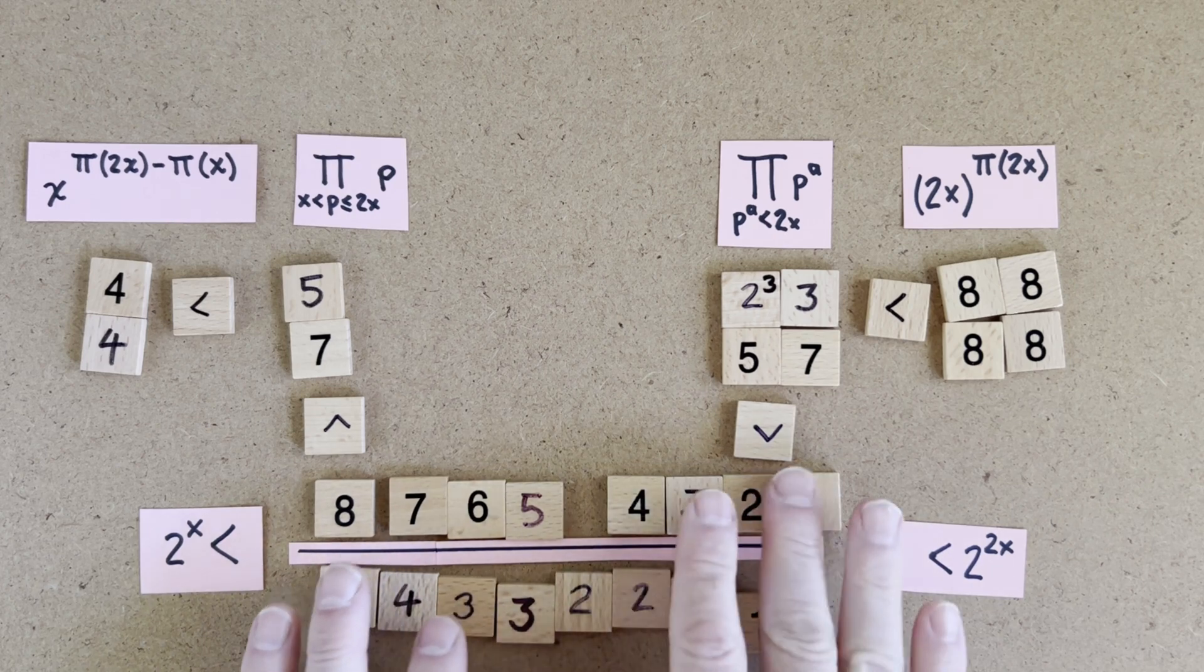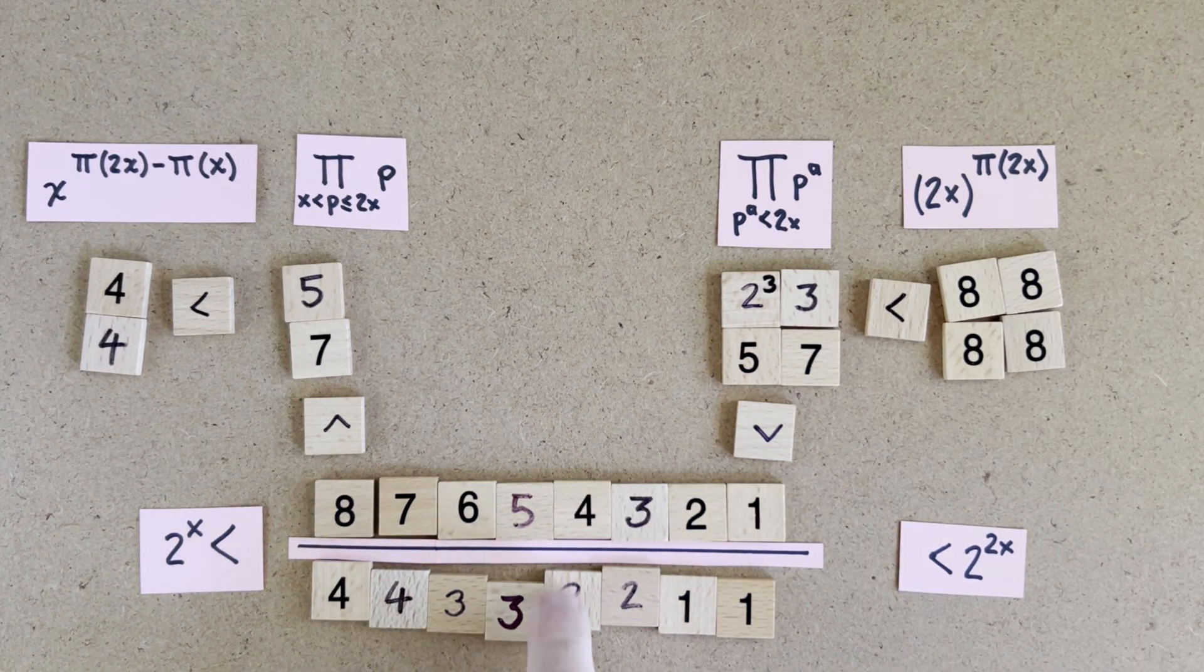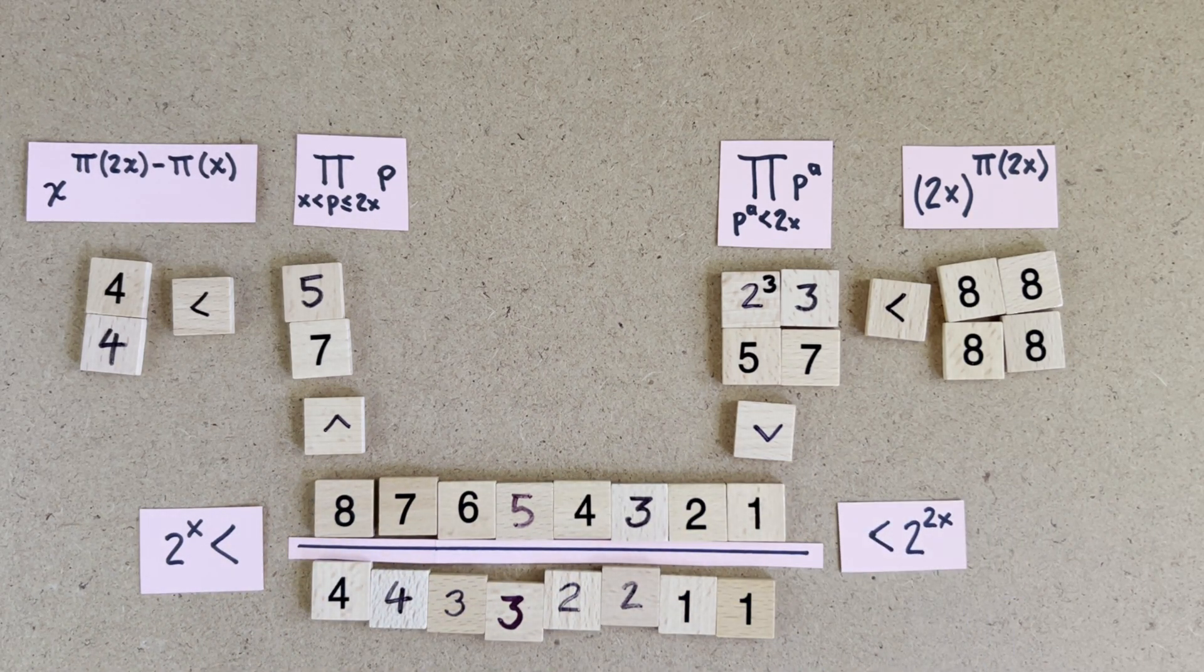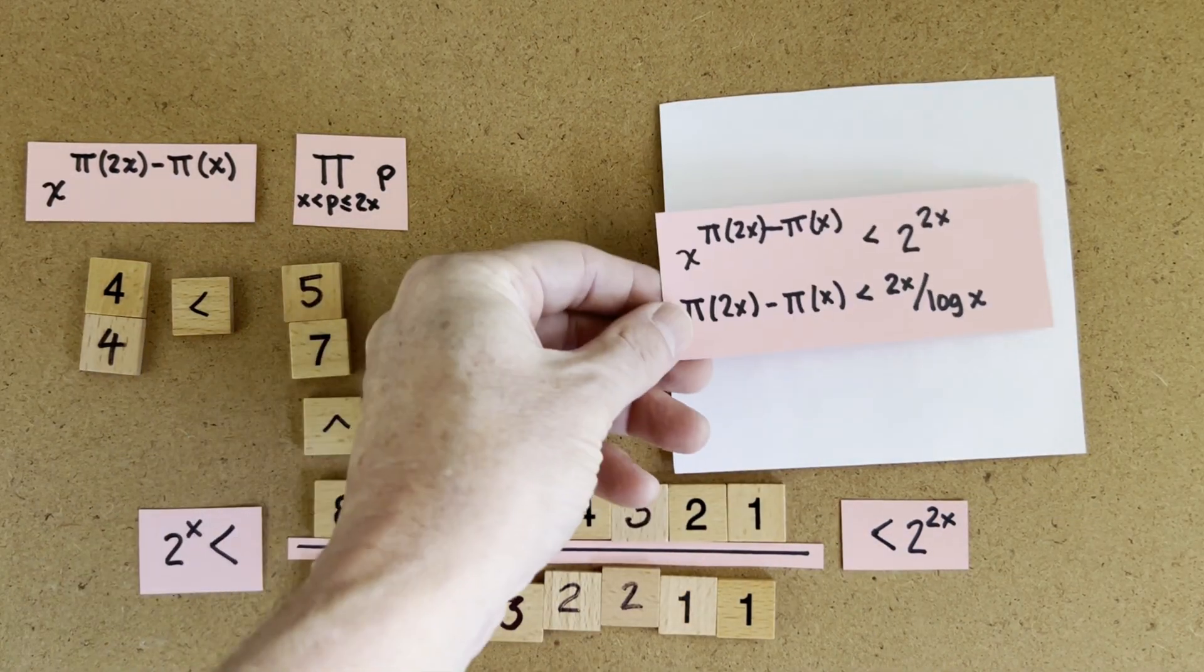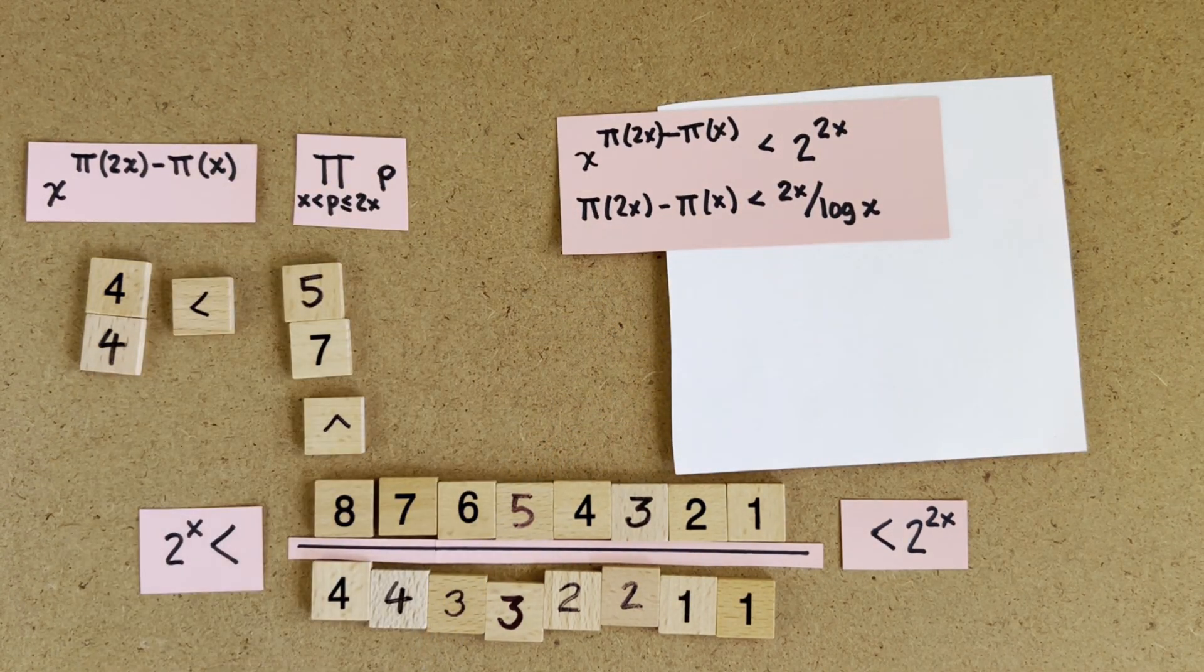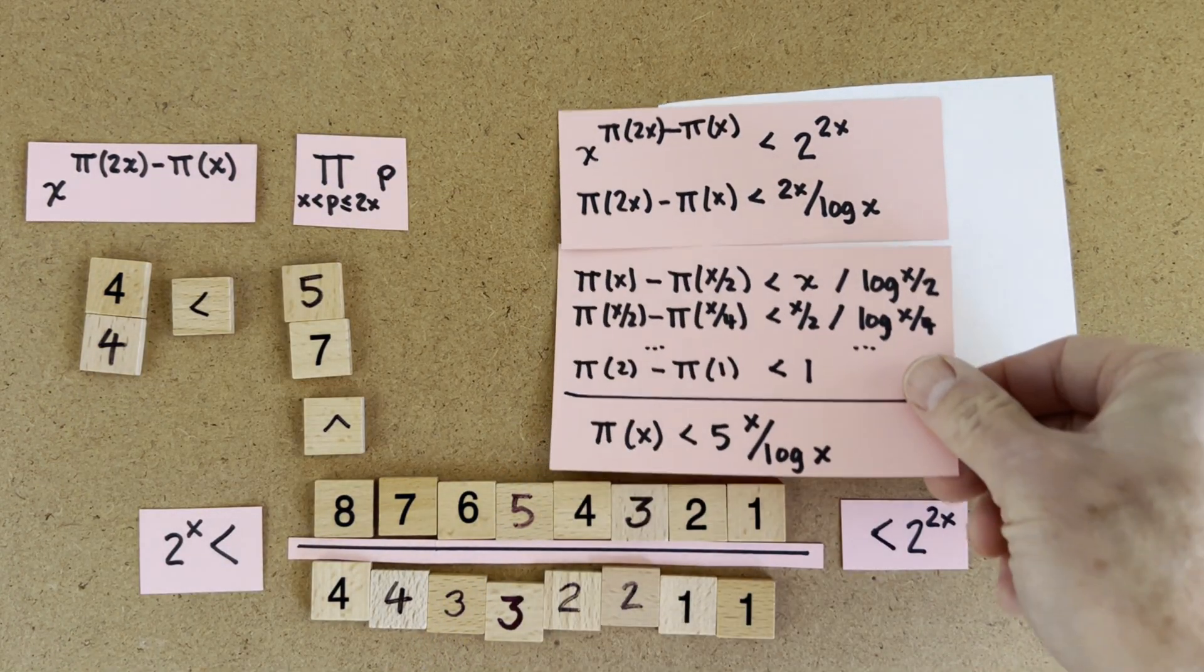And it's less than 2 to the 2x because rearranging here, each of these 2x little ratios is smaller than 2. Okay, that's the whole picture. And we can easily get the two bounds from it. For the first bound, x to the π(2x) minus π(x) is less than 2 to the 2x. So we get this, which is a general formula, which gives us these facts.